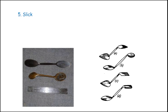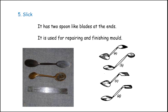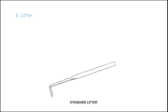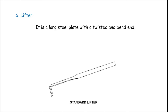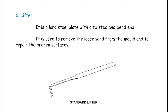The next one is the slick. It has two spoon-like blades at the ends and is used for repairing and finishing the mold. The lifter is a long steel plate with a twisted and bent end. It is used to remove loose sand from the mold and to repair broken surfaces.